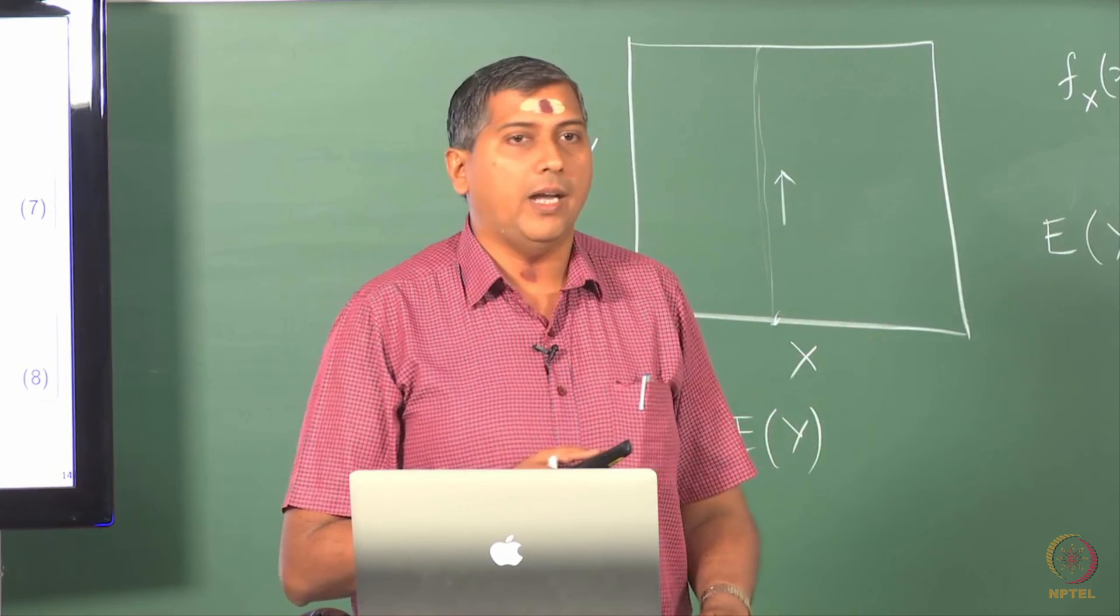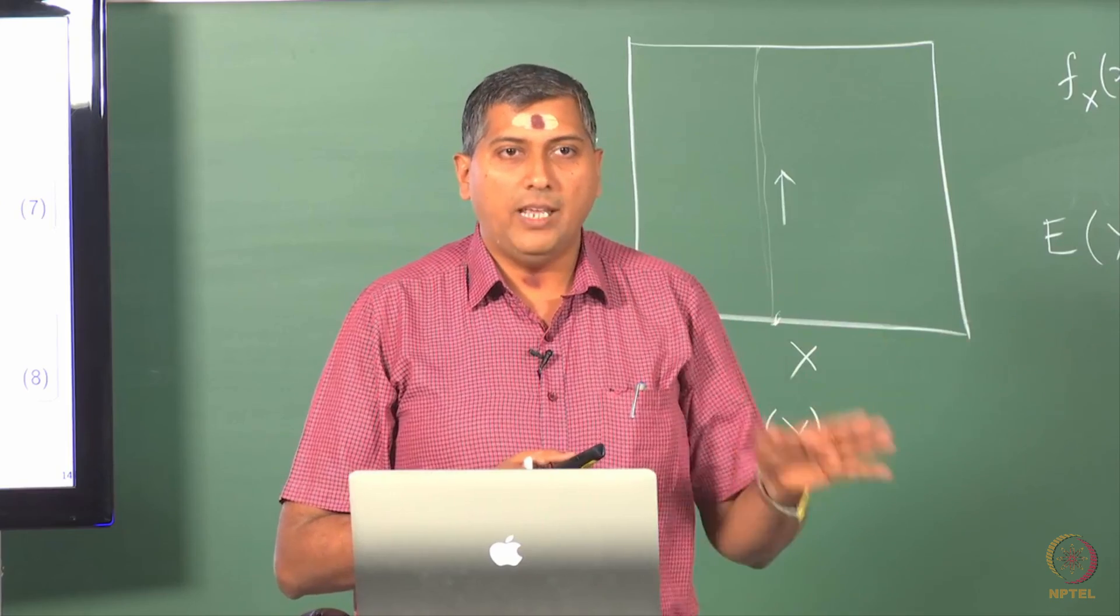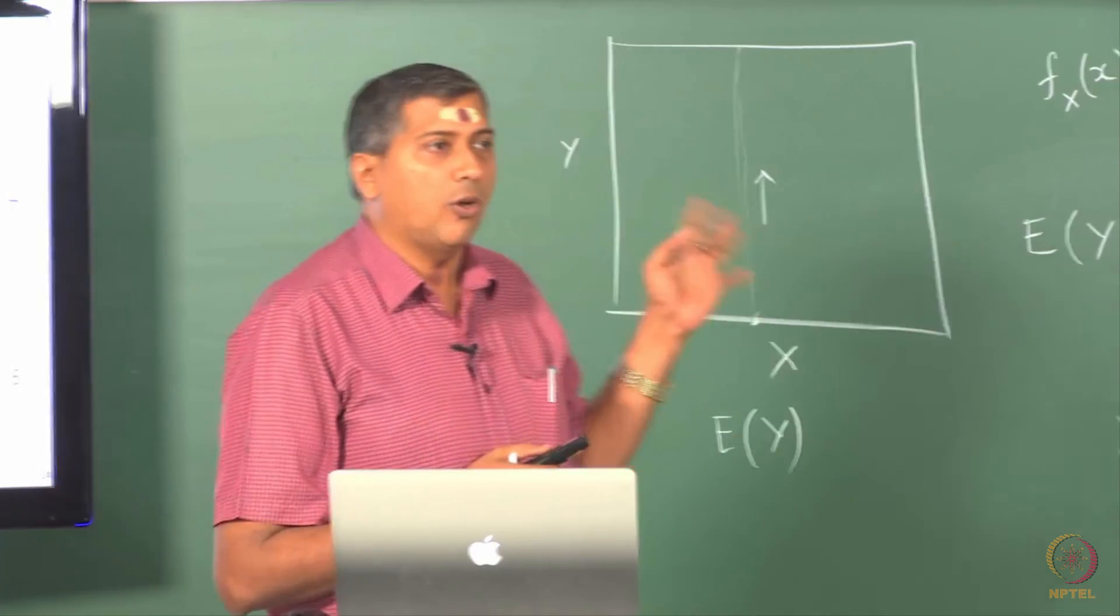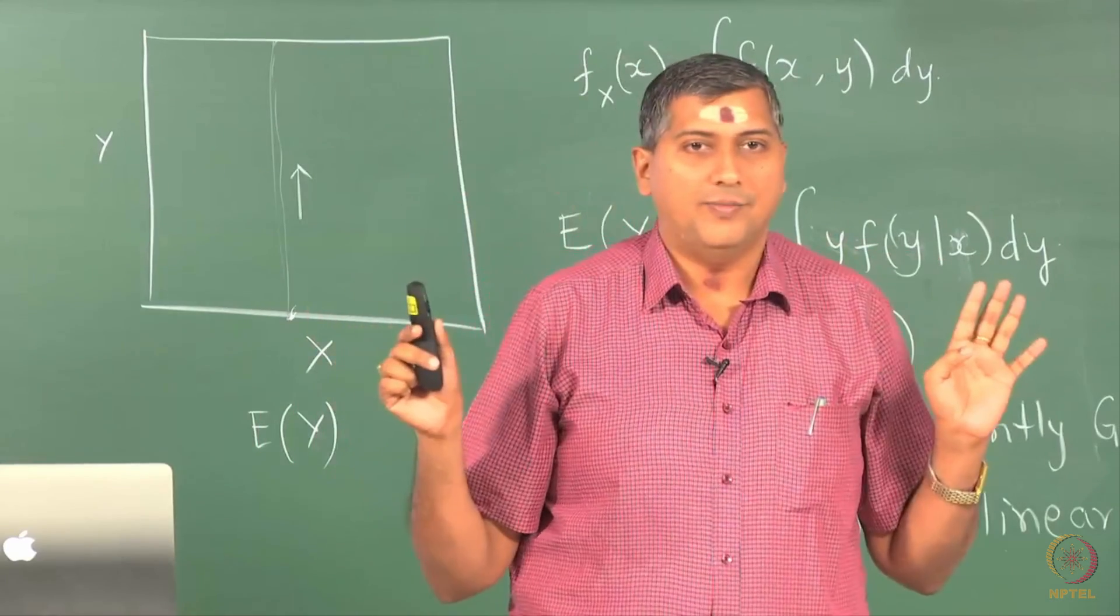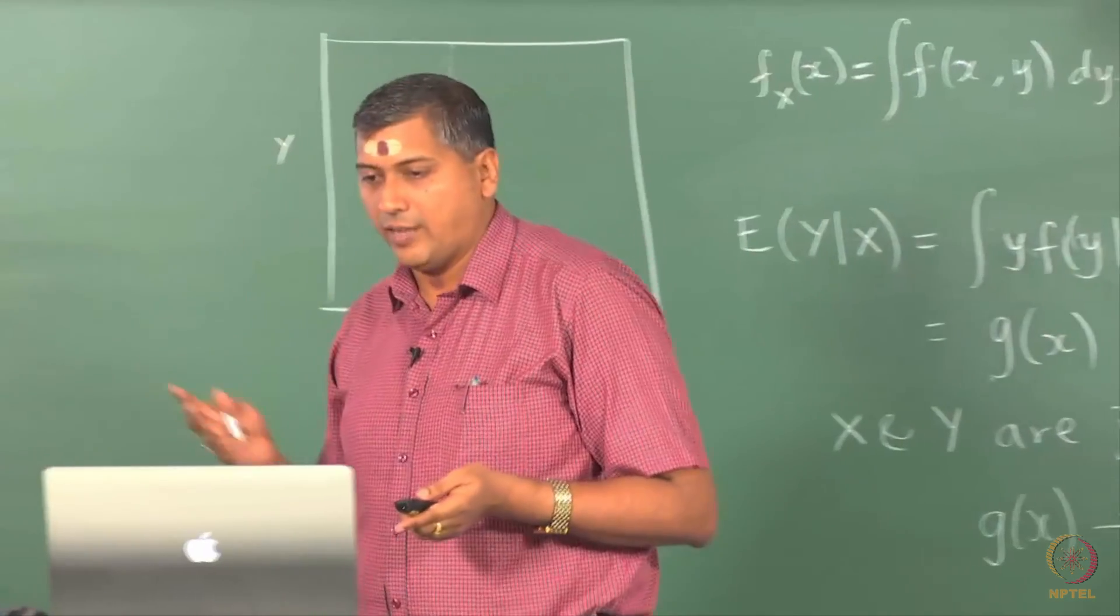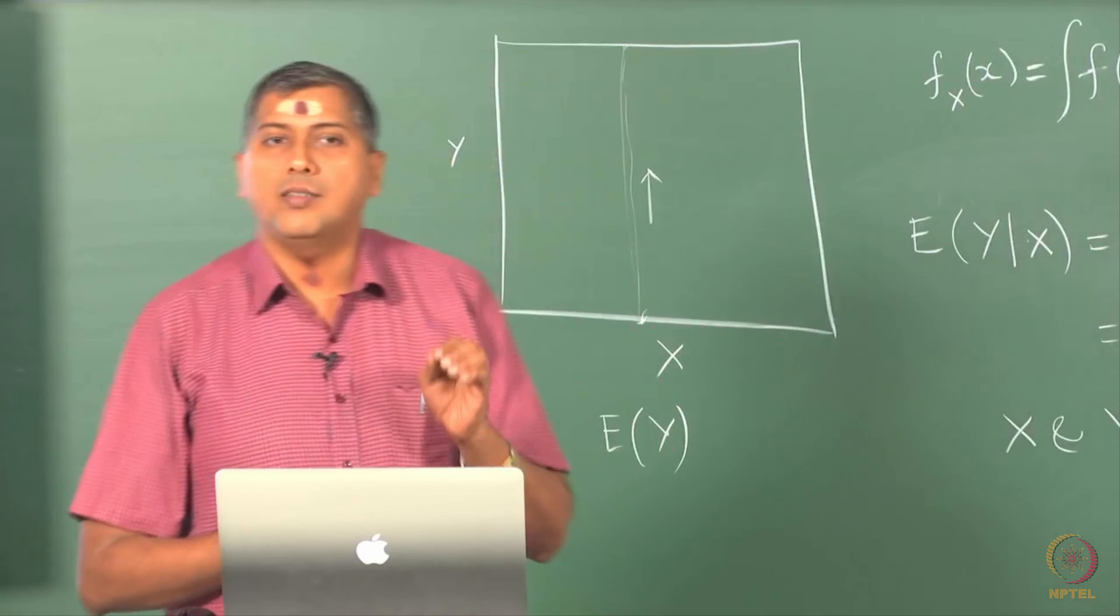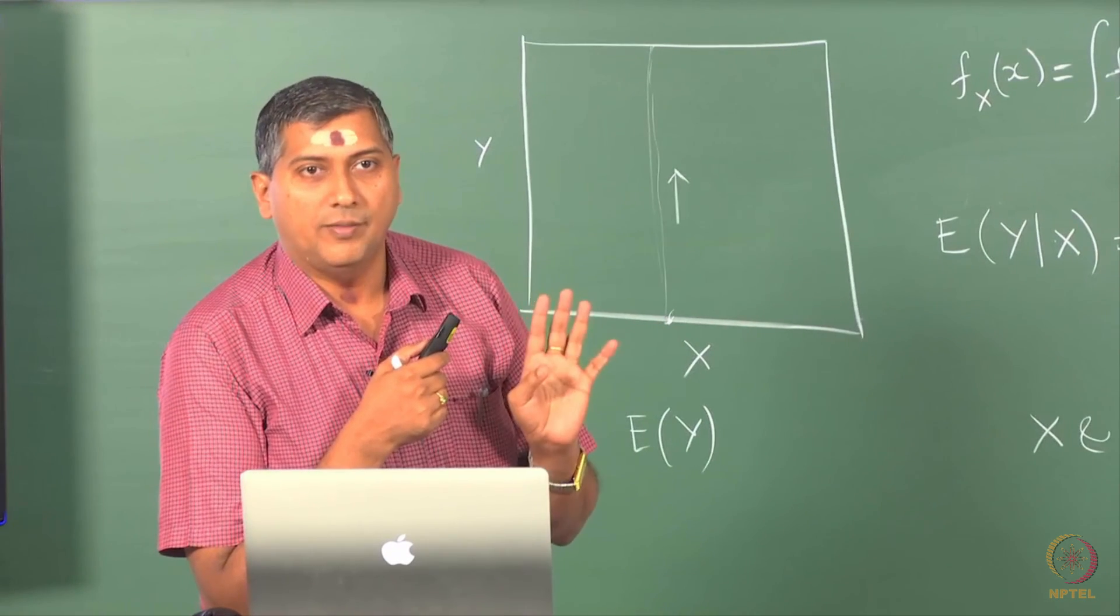If x and y are independent, there is no model that you can build for y using x. That means it does not matter whether you give me x or not, the prediction of y is unaltered. Whereas uncorrelatedness, as we will see today in the next lecture, only makes statements about the absence of linearity or presence of it, that is all.